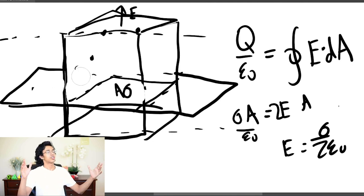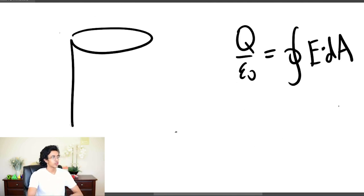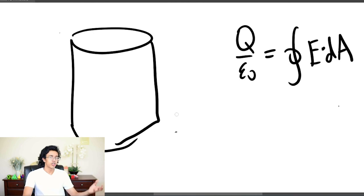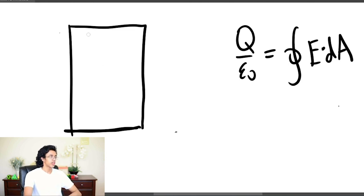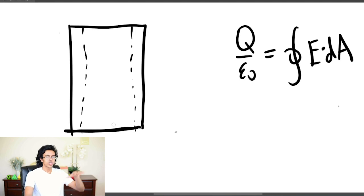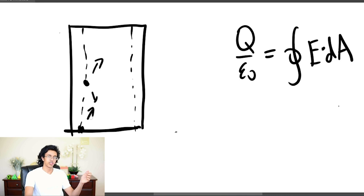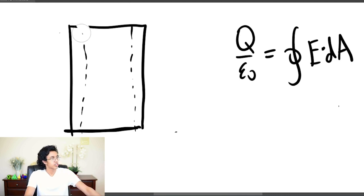Now let's try a cylinder. We have a cylinder and apply the same two steps: draw it in 2D and find the points that are equal to each other. In side view a cylinder looks like a rectangle. All points on a line at the same radial distance from the axis are symmetric relative to the center. We assume the cylinder is infinitely long so we don't have to worry about edge effects — without infinite length, a point near the end would differ from one in the middle.